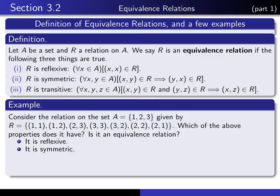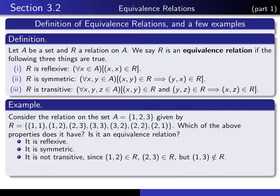Now what about transitive? Is it true for any X, Y, and Z that if (X, Y) is in the relation and (Y, Z) is in the relation — where Y is the linking element — does it necessarily follow that (X, Z) is in the relation? The answer is no. If you look at (1, 2) and (2, 3), then 1 is related to 2 and 2 is related to 3, but (1, 3) is not in the relation. So it's not transitive — we've produced a counterexample. Since it doesn't satisfy all three properties, this is not an equivalence relation.